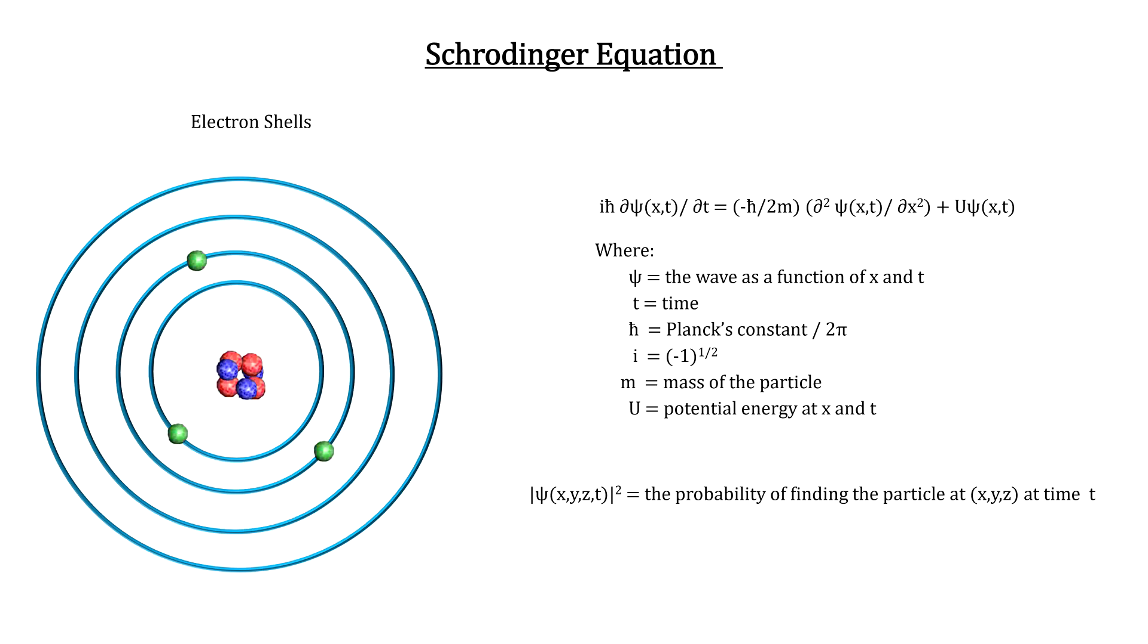Shells contain multiple orbitals. An atomic orbital is defined as the region within an atom that encloses where the electron is likely to be found 95% of the time.